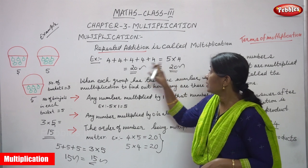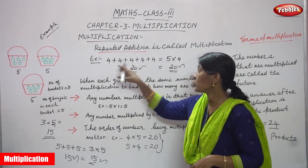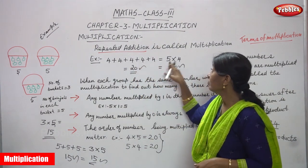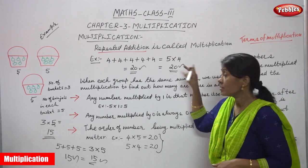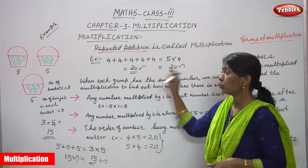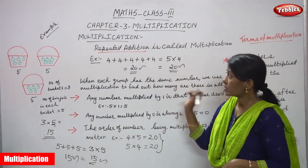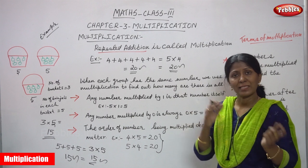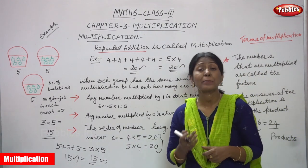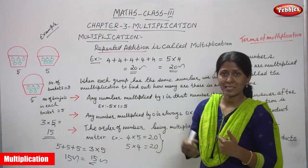How many 4s do you count? 1, 2, 3, 4, 5 — five 4s. So 5 into 4, you can get 20. Both answers are correct. Multiplication, otherwise we can call it repeated addition — both are similar.